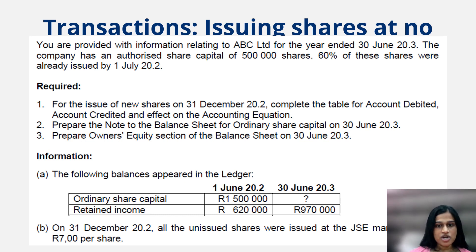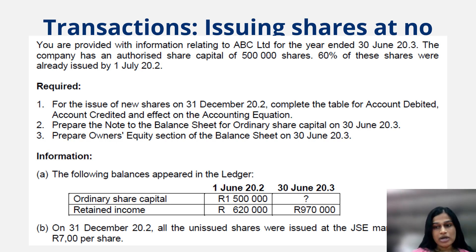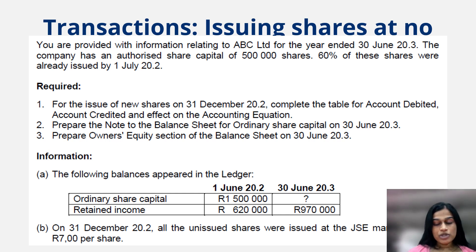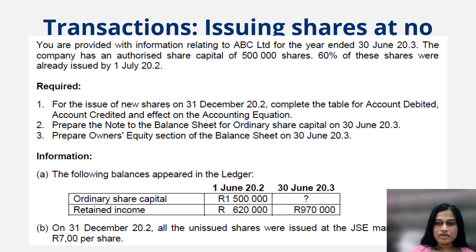Let's look at our first example, taken from the Western Cape Department of Education website. You are provided with information relating to ABC Limited — LTD meaning it is a public company — for the year ended 30th June 2003, meaning the financial year starts on 1st July 2002. The company has an authorized share capital of 500,000 shares, and 60% of these shares were already issued by 1st July 2002, representing the issued shares.